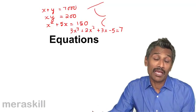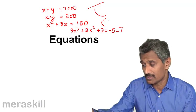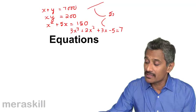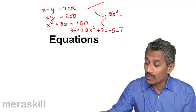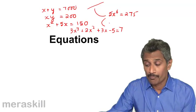So various varieties, you may have an equation in degree 5, you may have an equation in degree 6, something like, say, 5x raised to 6 is equal to 275, suppose.